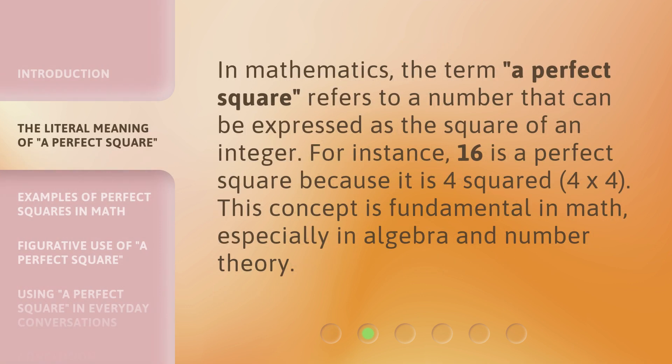In mathematics, the term, a perfect square, refers to a number that can be expressed as the square of an integer. For instance, 16 is a perfect square because it is 4 squared, 4 by 4. This concept is fundamental in math, especially in algebra and number theory.